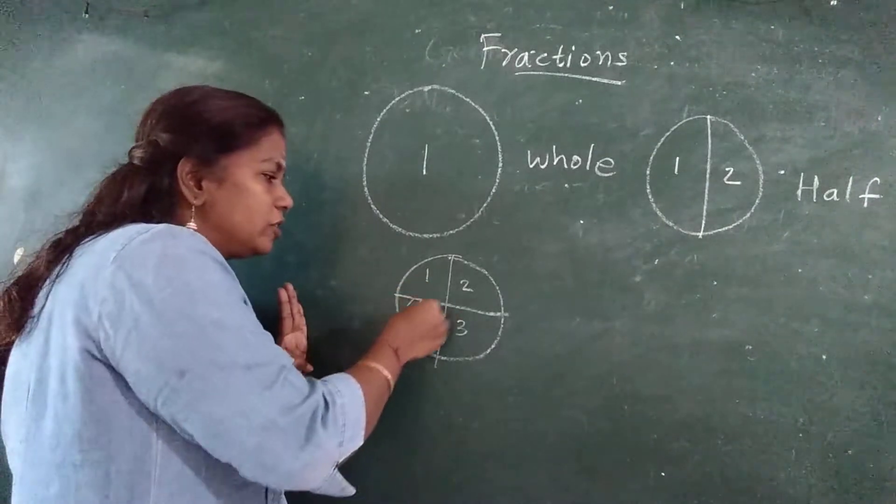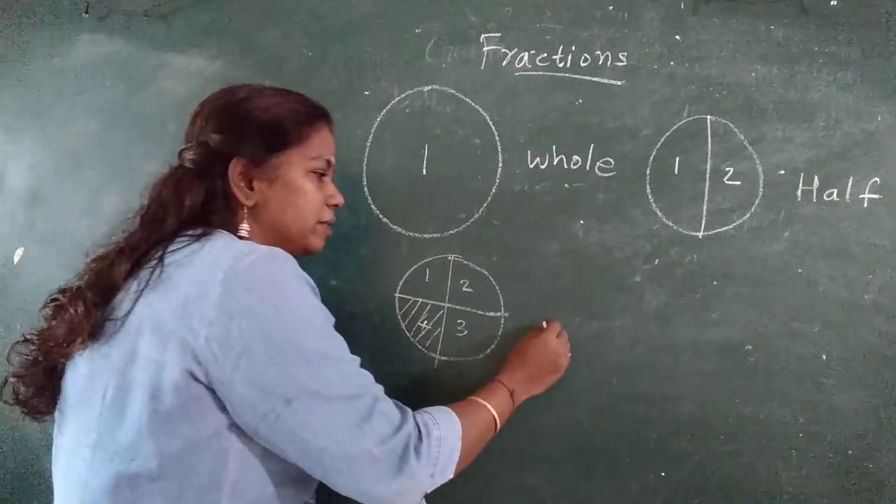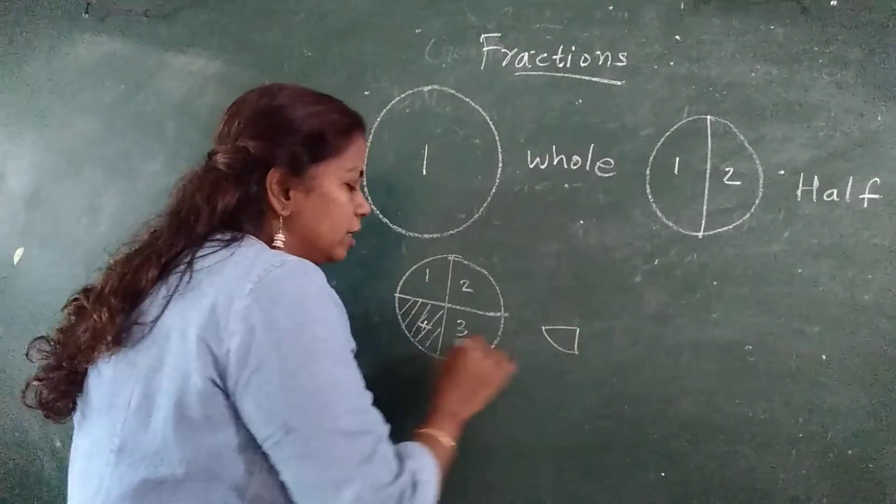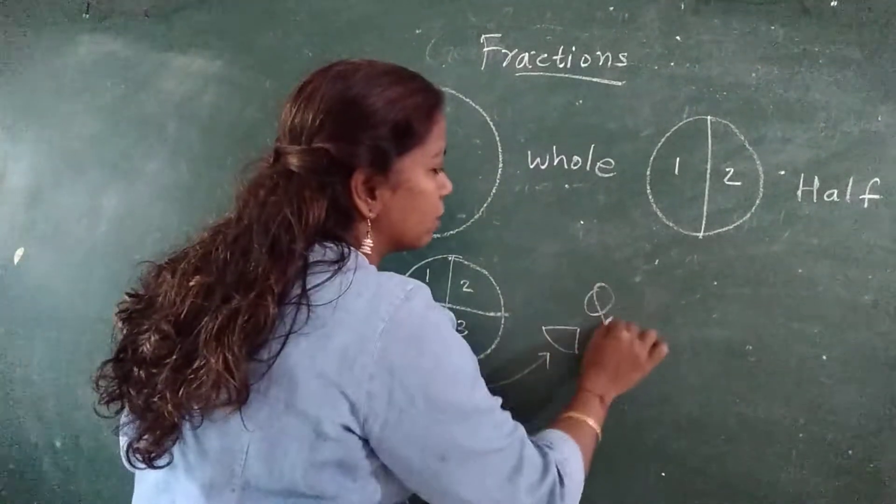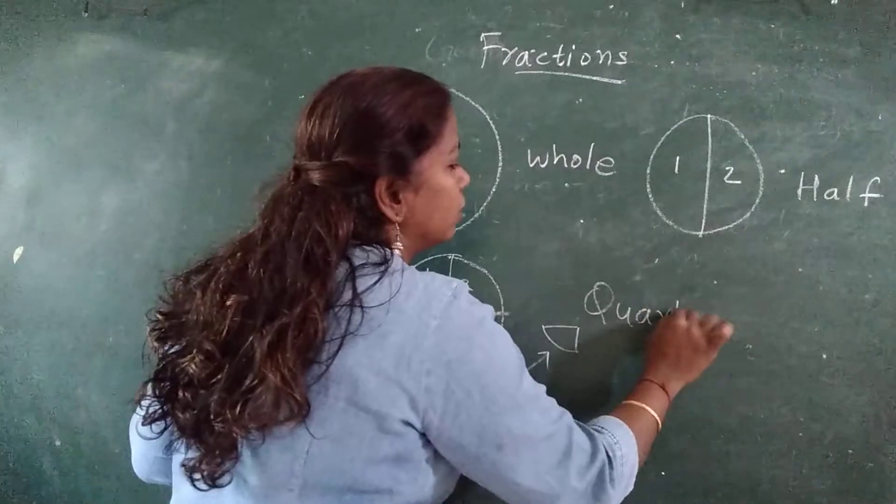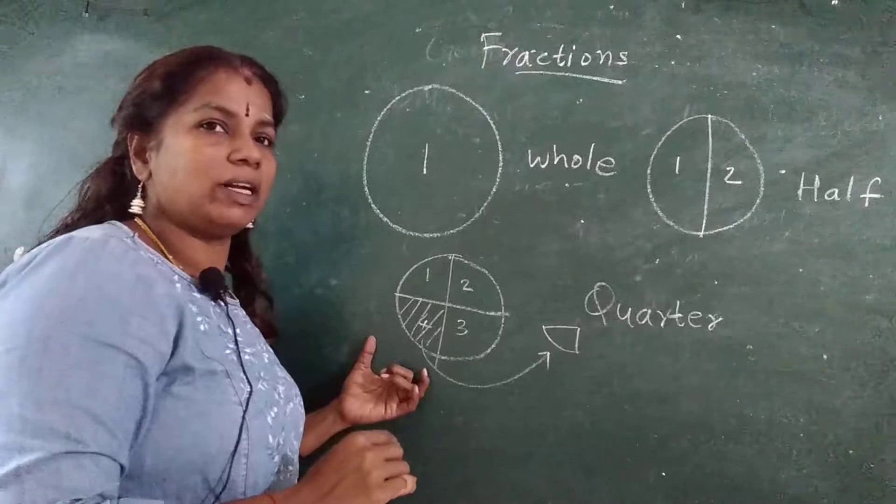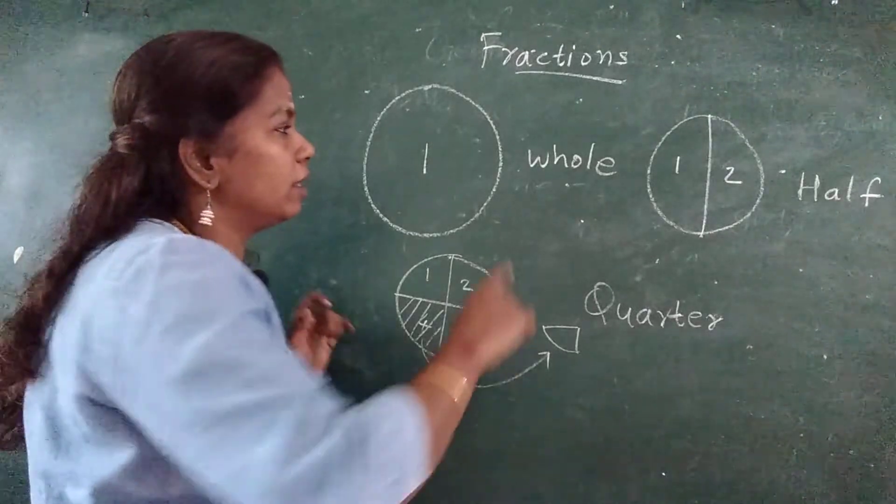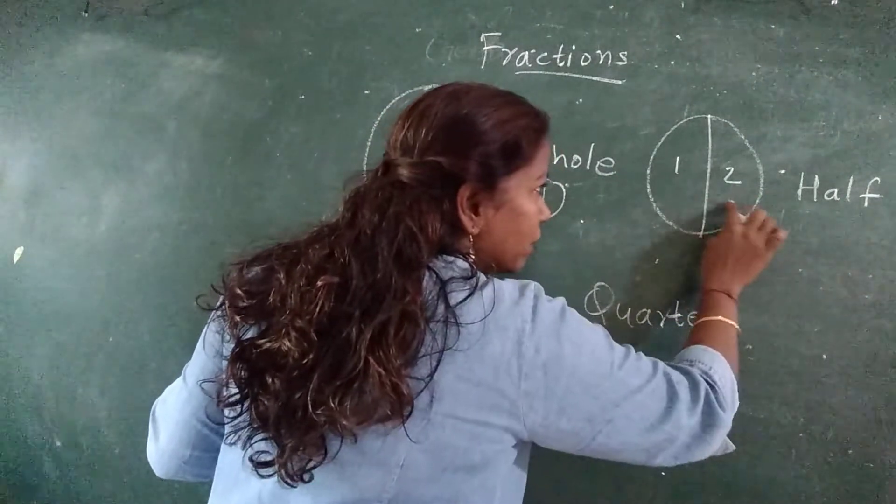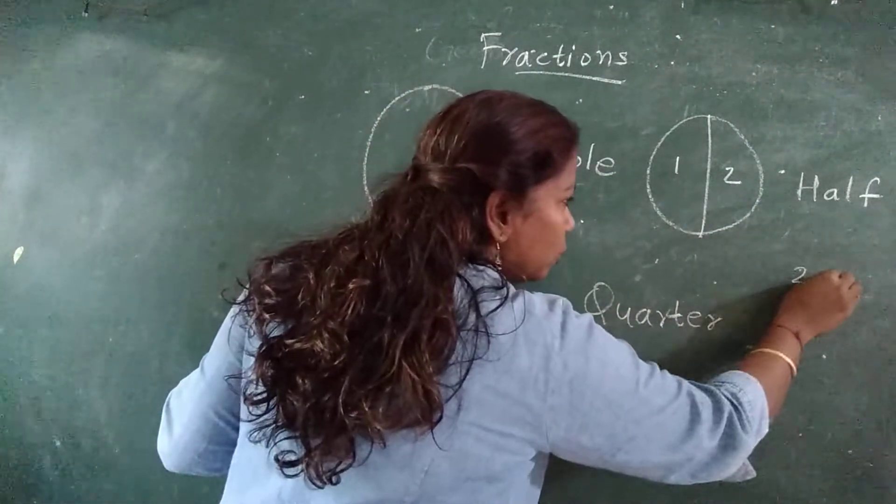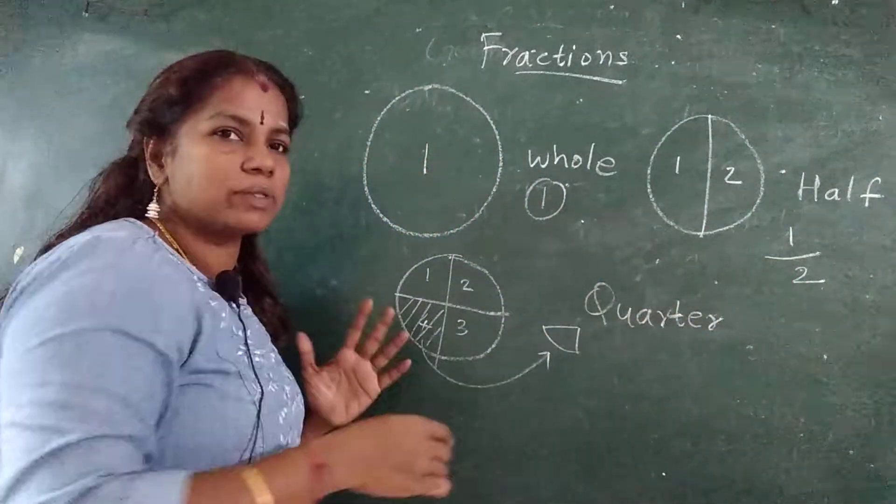If suppose I shade this part, means I am considering only this part. This is called as quarter. Then it becomes half.